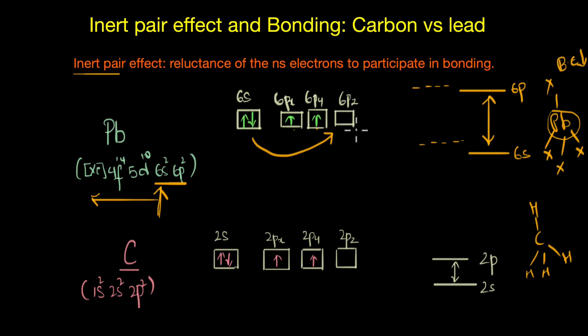So what happens is instead, lead would rather let go of the 2p electrons easily and form Pb2+ ions. Now this formation of Pb2+ is also favored by the low ionization enthalpy.